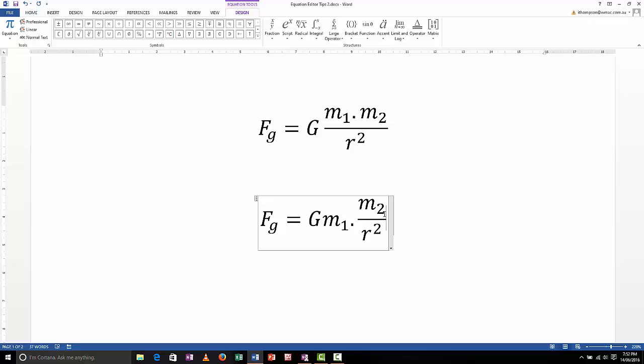Let's go back. I've got my F sub G equals capital G. I'm going to put a spacebar in this time because I actually want a space. I don't want my G on top of the fraction, so I'll put a space in there. Now I'm going to open some brackets. The reason I'm opening my brackets is I want to put M1 dot M2 in brackets because that's telling equation editor that that is what I want to go on top of my fraction bar.